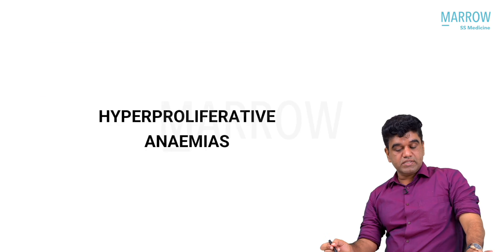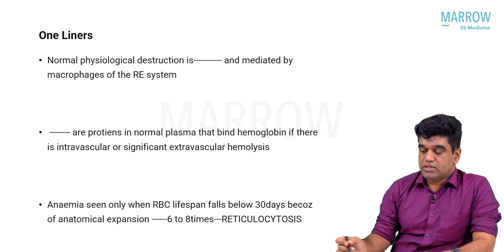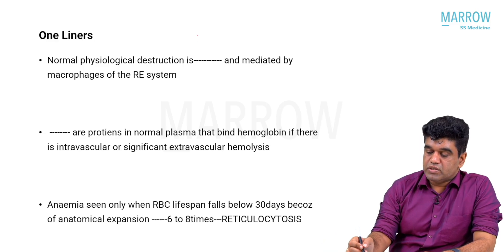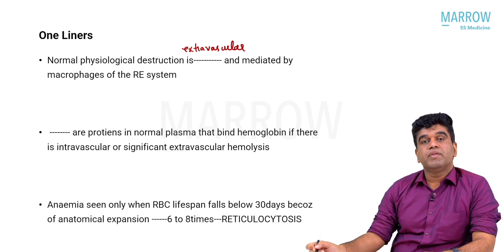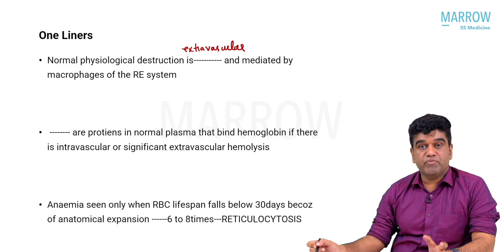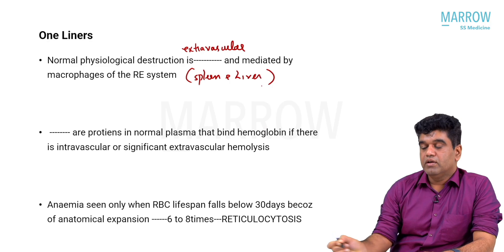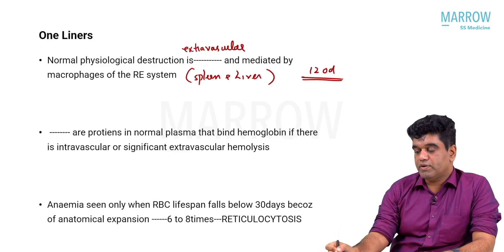Before we see the diseases, just some basic fundamental points: normal physiological destruction is extravascular and is mediated by macrophages of the reticuloendothelial system. There is no destruction happening in the blood. It is mediated by the reticuloendothelial system — macrophages predominantly seen in the spleen and liver. This destruction happens after a period of 120 days.